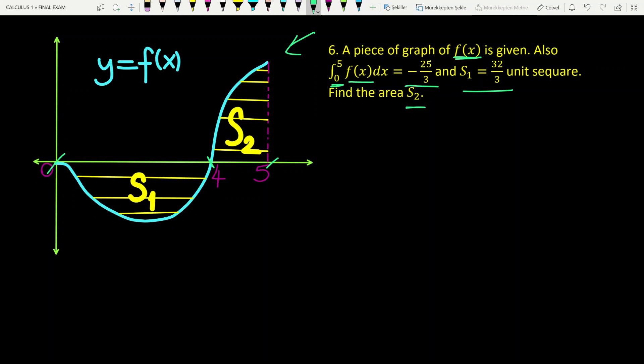We need to find area S2, which is represented here. We can represent the S1 area by an integral. Since S1 is below the x-axis, the integral from 0 to 4 of f(x)dx equals minus S1 area.